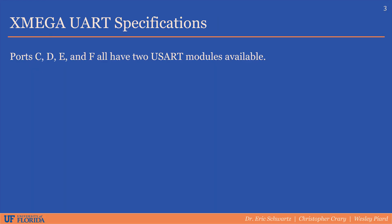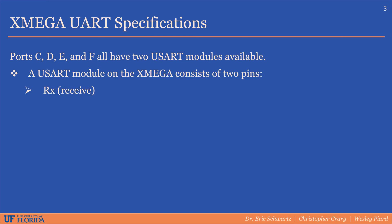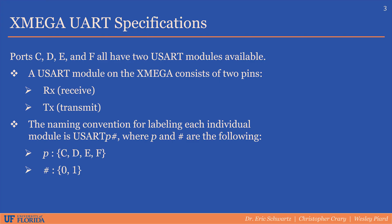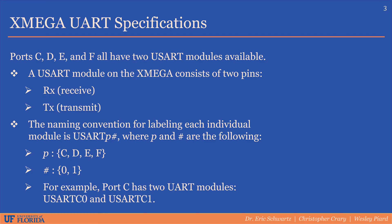Ports C, D, E, and F all have two UART modules available. Each individual UART will consist of two pins: receive and transmit. The receive pin of one UART would be connected to the transmit pin of another UART, and vice versa for the transmit pin. The naming convention for labeling and differentiating each module is as follows — for example, the two UART modules on port C are called USART C0 and USART C1.